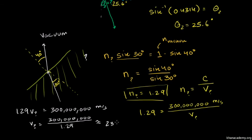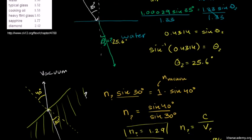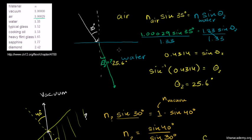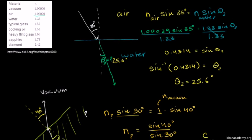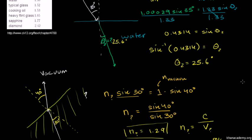That gives approximately 232 million meters per second. Light travels 1.29 times faster in a vacuum than in this material. If we had to guess what this material is — I just made up these numbers — something with a refraction index close to 1.29 could be water, or maybe some type of solid material. Anyway, those were hopefully two fairly straightforward Snell's Law problems. In the next video, I'll do a slightly more involved one.